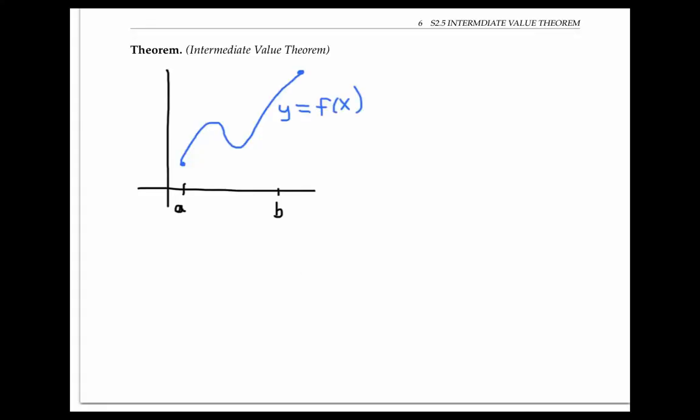The intermediate value theorem says that if f is a continuous function on the closed interval [a,b], and if n is any number between f(a) and f(b), then f has to achieve that value n somewhere.